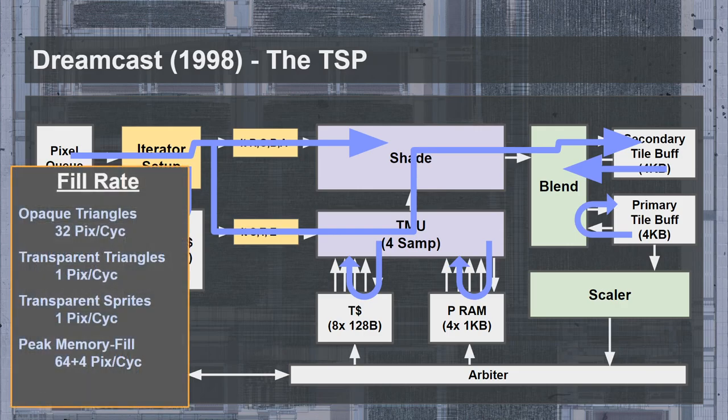We can now calculate fill rates for the Dreamcast GPU. When rendering opaque triangles, the GPU could draw 32 pixels per cycle due to hidden surface removal. This drops to 1 pixel per cycle with transparent triangles and sprites requiring alpha blending — though if a sprite contains no transparent pixels, it could still draw at 32 pixels per cycle. In general, due to bounding-box binning, achieving 32 pixels per cycle requires an opaque axis-aligned sprite. A triangle would necessarily draw at 16 pixels per cycle in the best case of a right triangle, since only half the bounding box is covered — still higher than desktop GPUs of the time.